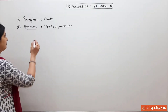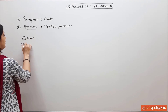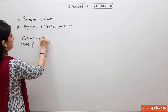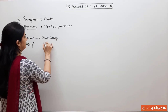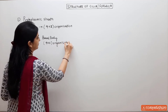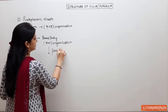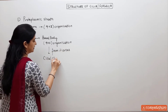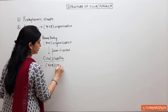From the previous lecture, we know that the centriole has a 9 plus 0 organization. This centriole is called the basal body, or blepharoplast, or basal granule — known by different names — with a 9 plus 0 organization. From the basal body arises the cilia or flagella, which has a 9 plus 2 organization.